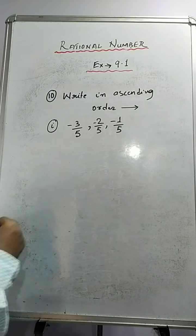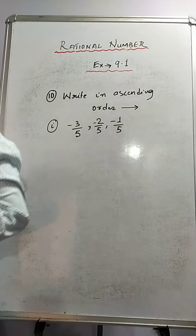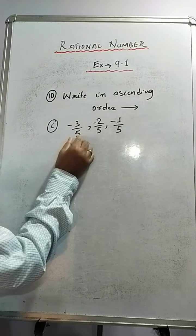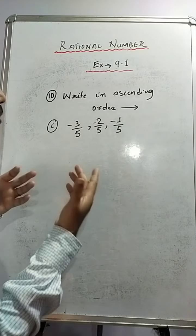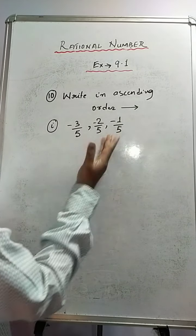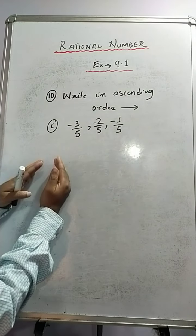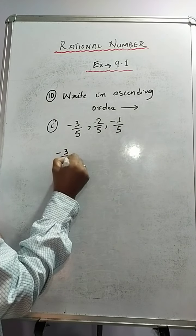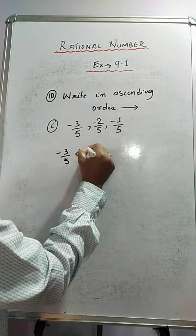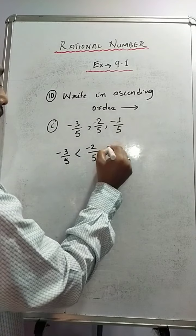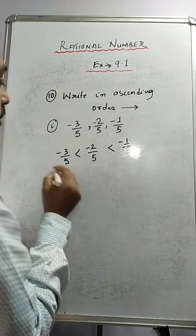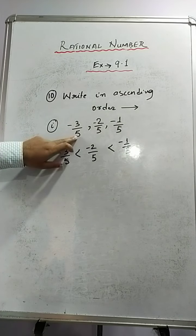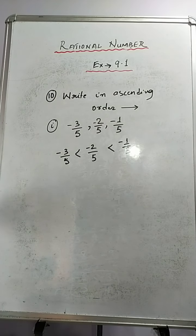In question number 10 we have to write the rational numbers in ascending order. In sum number 1 we have minus 3 by 5, minus 2 by 5, and minus 1 by 5. All the rational numbers carry the same denominator, so it is easy to compare them. Ascending order means small to large. Obviously minus 3 is the smallest, so: minus 3 by 5 is less than minus 2 by 5 is less than minus 1 by 5. The denominators being the same made this straightforward.